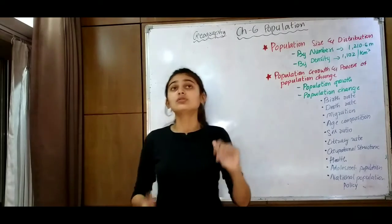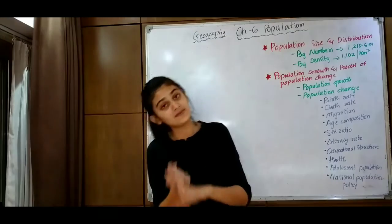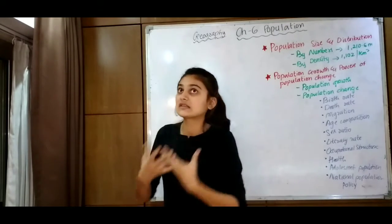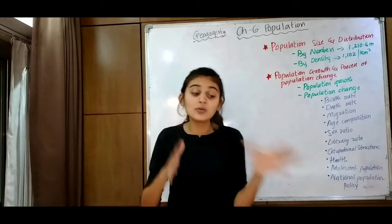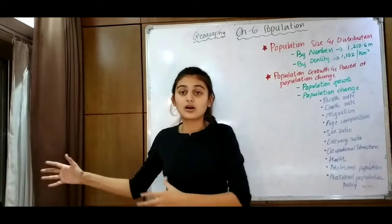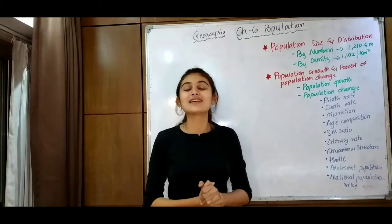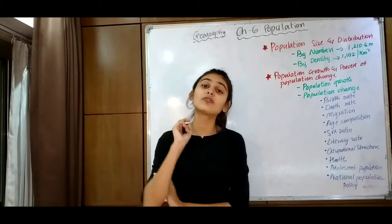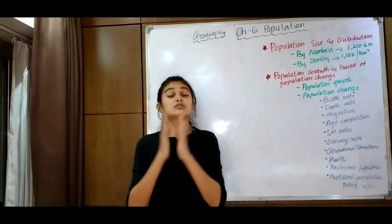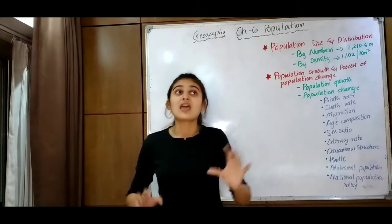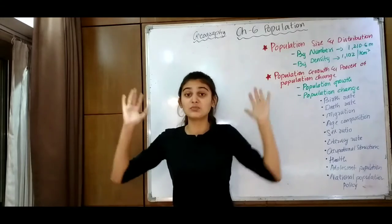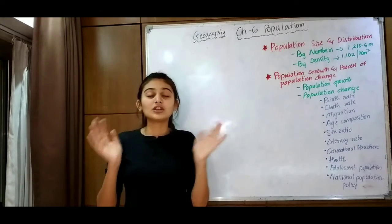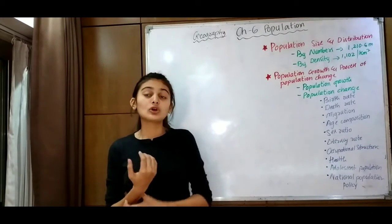First comes population size and distribution, which is measured in two ways: by number and by density. By numbers, we count the population. An enumeration of population in a given period of time is known as a census. In India, the census is held every 10 years. According to the 2011 census, India's population is 1,210.6 million.